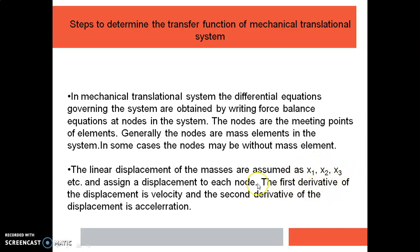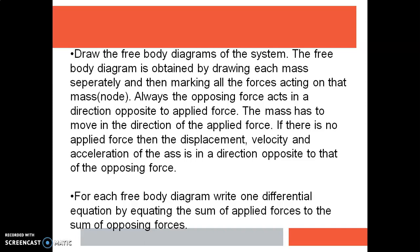The first derivative of displacement is velocity and the second derivative is acceleration. Then we draw the free body diagrams for each of these nodes or mass elements. For each mass, we draw the direction of applied forces and the opposing forces, and indicate the displacement of that particular mass element. The free body diagram is obtained by drawing each mass separately and marking all the forces acting on that node.